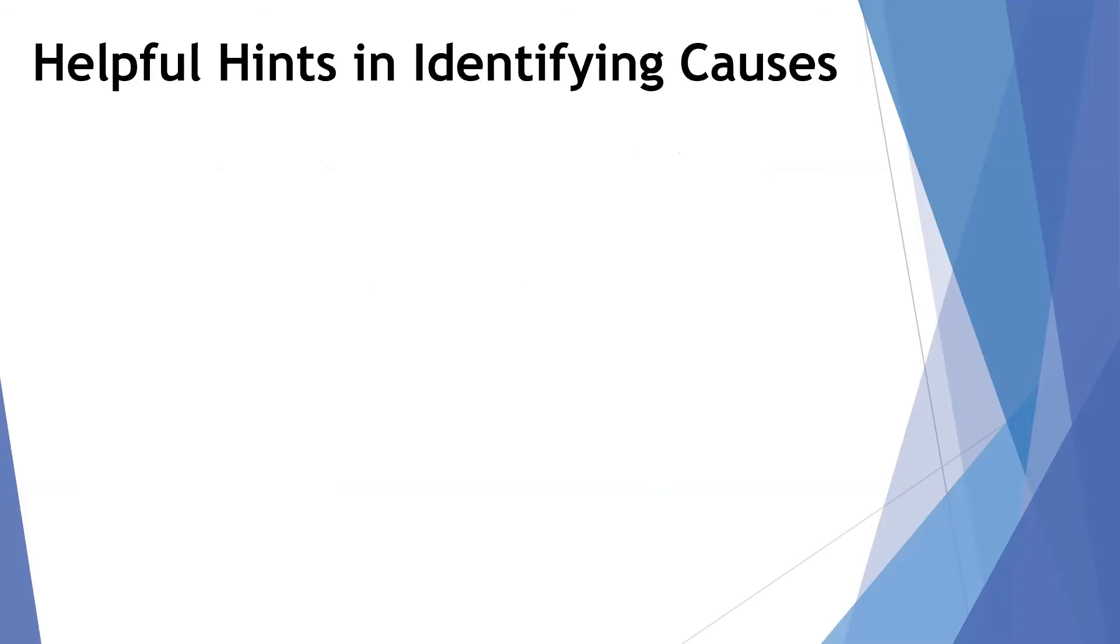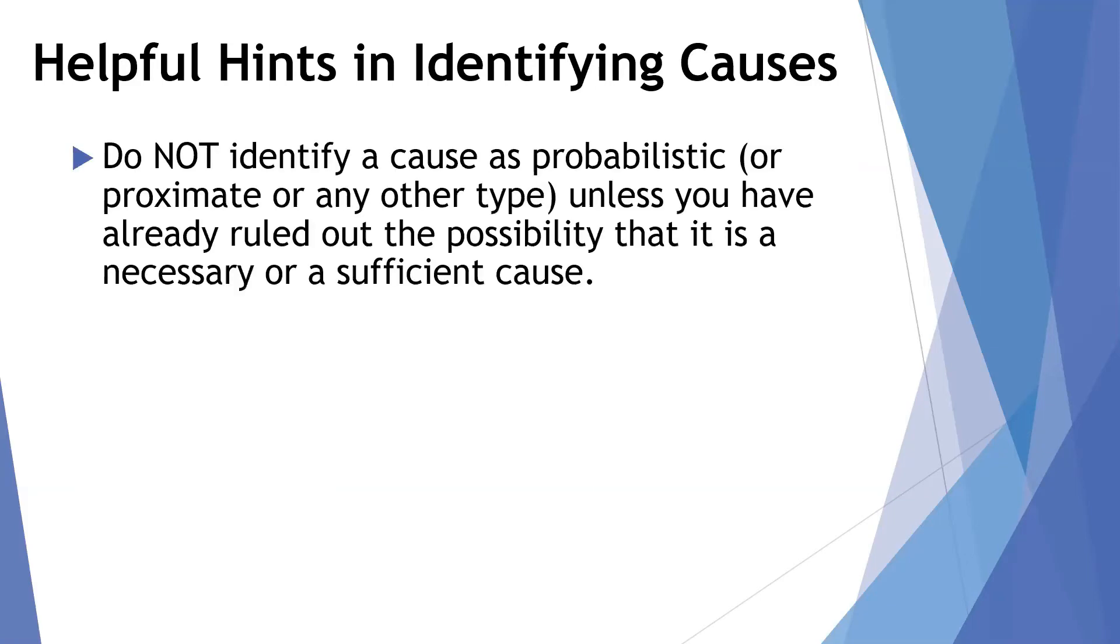Okay, so a few helpful hints when we're identifying causes before we go on and mention a couple other types of causes. Again, repeat, do not identify a cause as probabilistic or proximate or any of the others we haven't gotten to yet unless you've already ruled out the possibility that it's a necessary or sufficient cause. So look for something to be a necessary or sufficient cause first, and only then if it's not, you go on to consider the other possibilities.